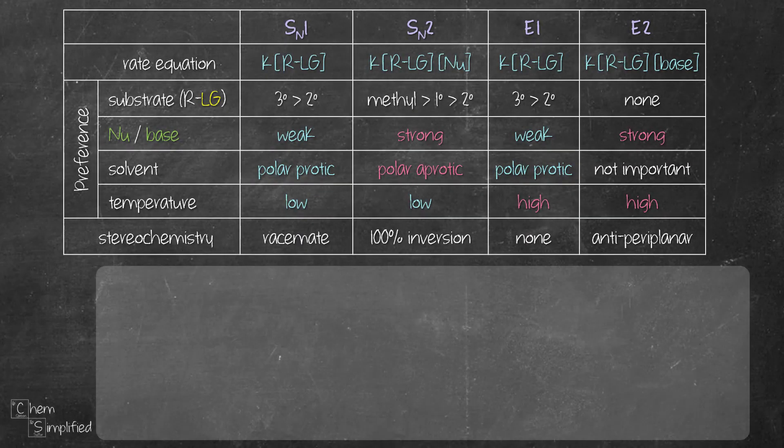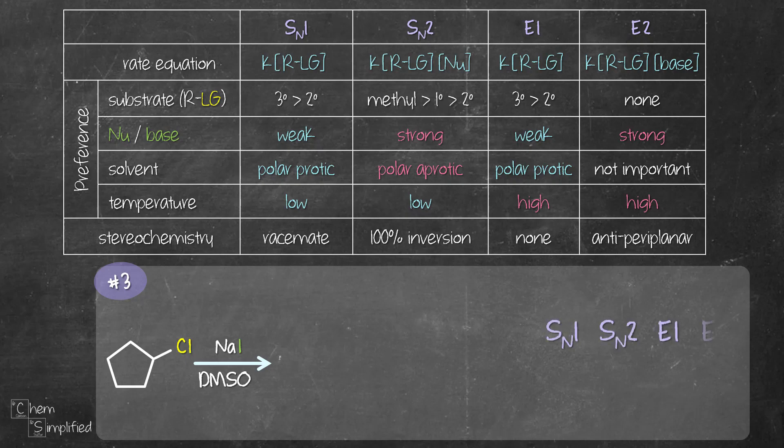Let's go for our final example. We have sodium iodide in DMSO added to chlorocyclopentane. Which mechanism will dominate? The substrate is a secondary alkyl halide. This doesn't rule out any mechanism.